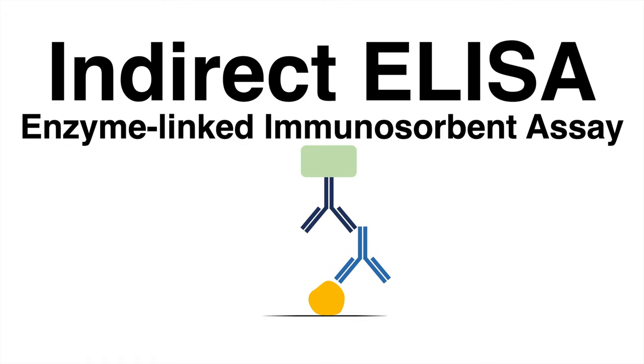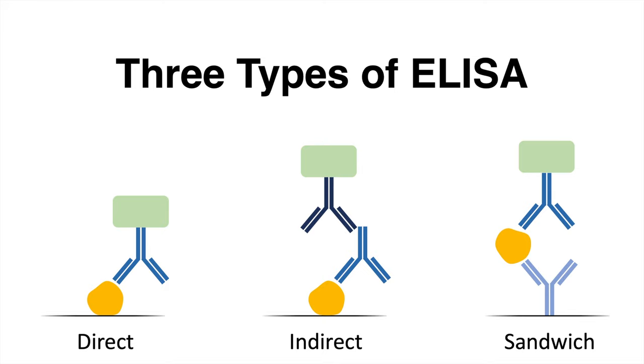This enzyme converts a substrate to a detectable product. From all variants of ELISA, the indirect ELISA will be explained here.